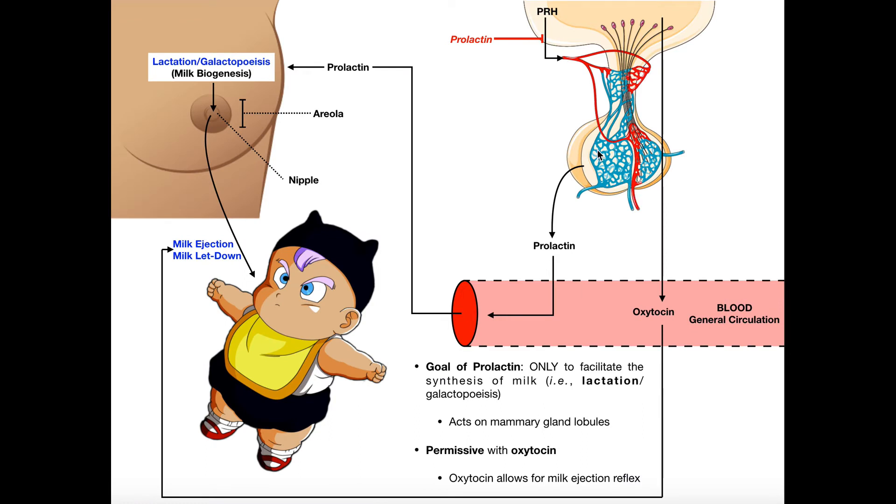Prolactin is a hormone that is released by the anterior pituitary, but one major way that prolactin differs in its function is it does not trigger the release of another hormone. Prolactin does not trigger the release of another hormone.